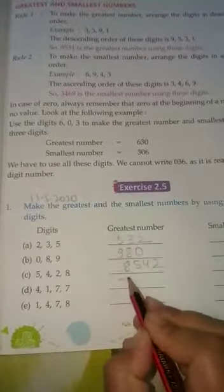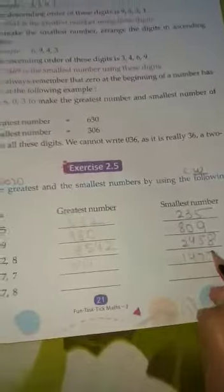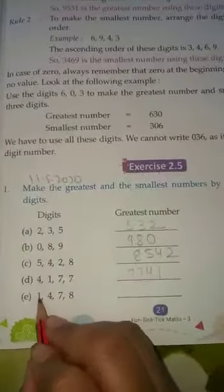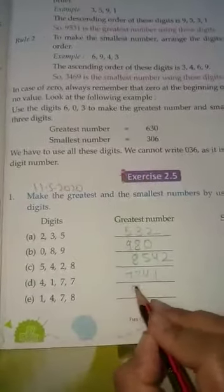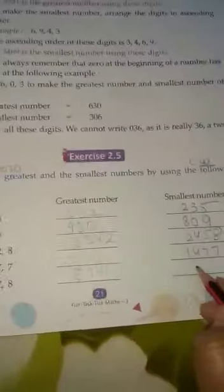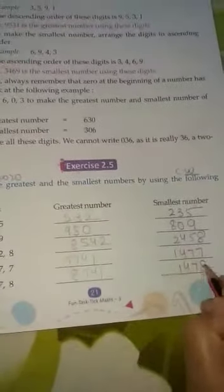For 7, 4, 1, the greatest is 741. Now reverse the digits: 1, 4, 7. Next, 8, 7, 4, 1 - now reverse the digits to get 1, 4, 7, 8.